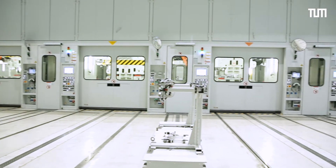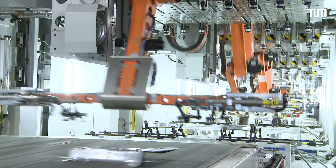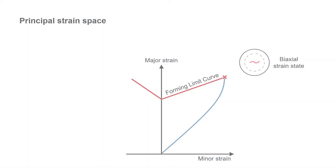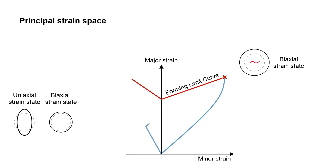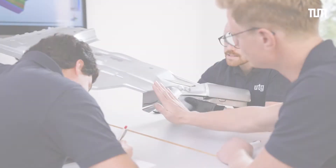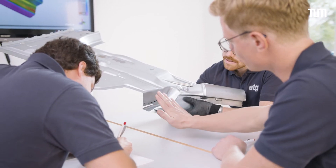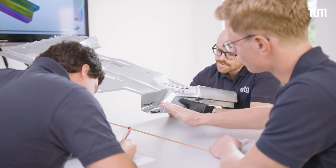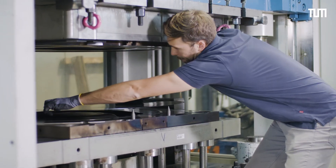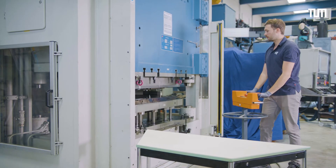The reality of a forming process however is much more complex. In standardized methods, only linear strain of a component is considered. However, in multi-step manufacturing processes a component is subjected to various load directions. According to the GFLC — the generalized forming limit concept — it is possible to assess occurring non-linear strain paths with regard to failure.